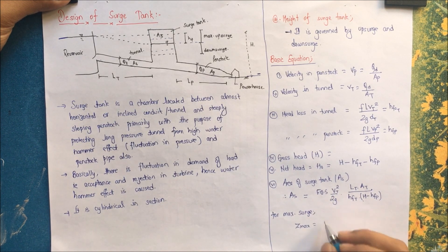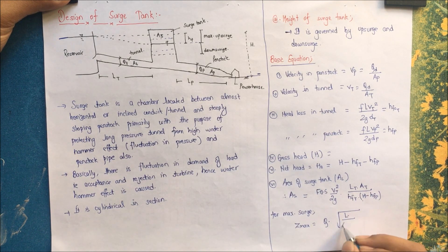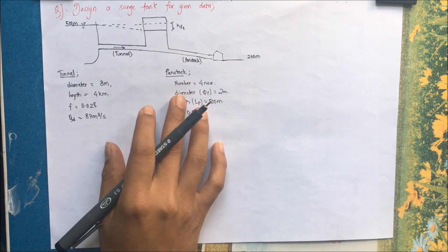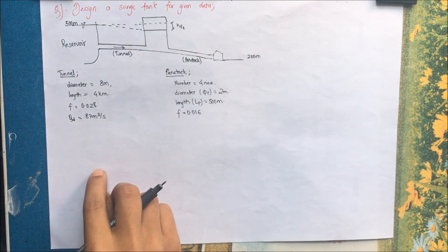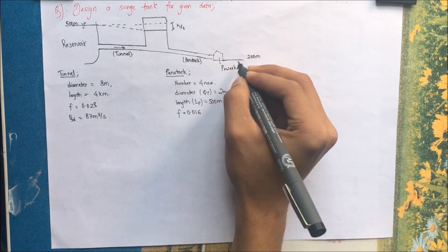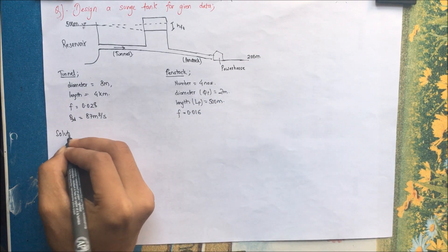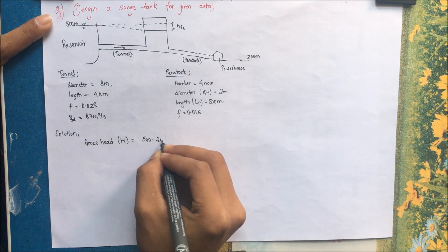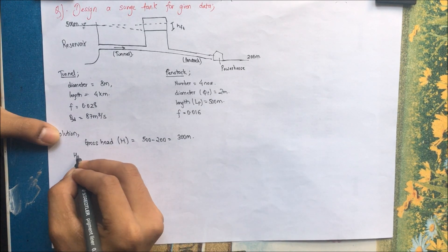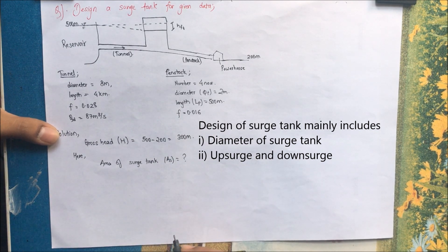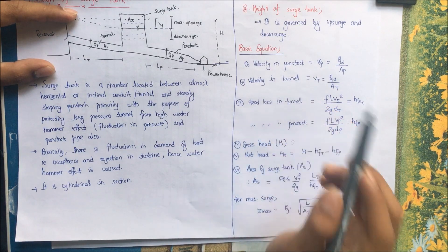Let us design a surge tank for the given data. The reservoir RL is 500 m and the powerhouse tailrace RL is 200 m. Solution: the gross head H = 500 − 200 = 300 m. We need to find the area of surge tank As. As already discussed in the introduction, we need to find various terms — let us go in sequence.